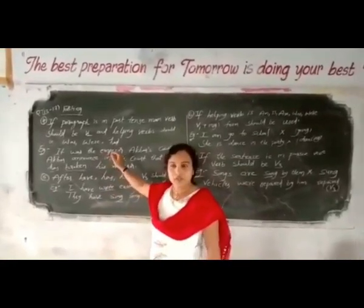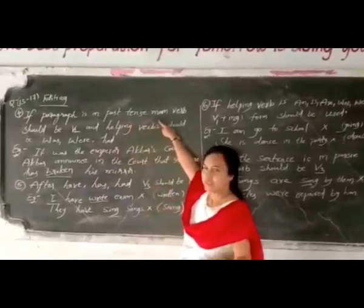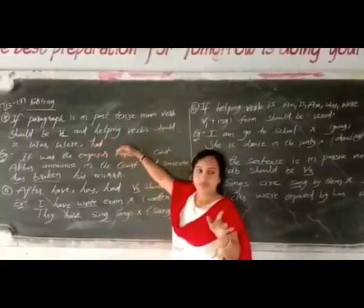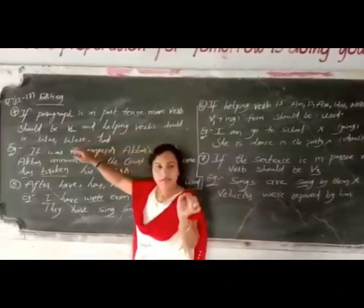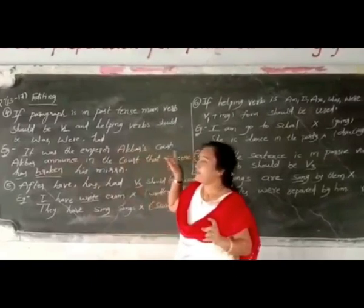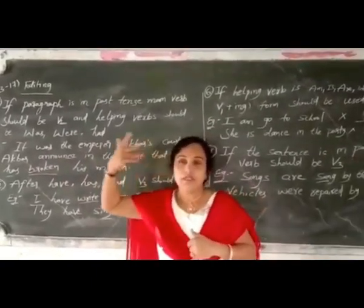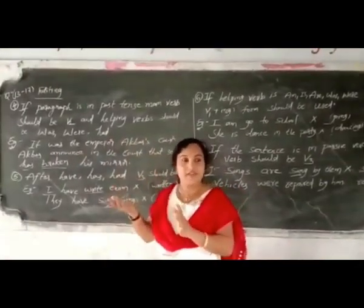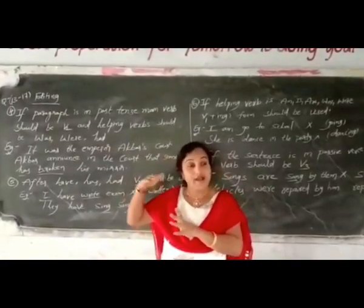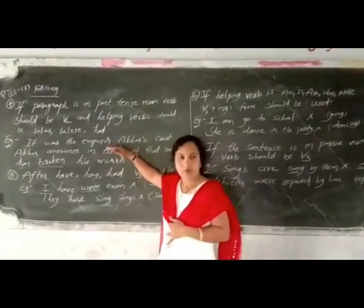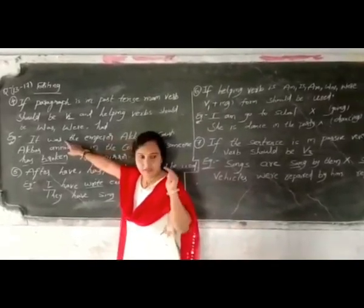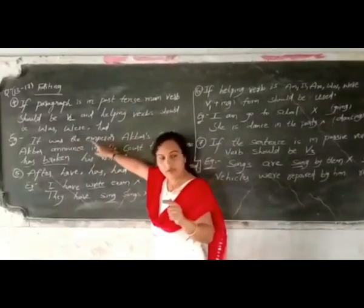The fourth rule of editing: if the paragraph is in past tense, the main verb should be V2, and the helping verb should be was, were, or had. When you speak about historical events and past events — emperors and kings, whatever happened in the past — you can consider it as past tense. For example: 'It was Emperor Akbar's coach' — the paragraph starts with 'was,' so it is in past tense.